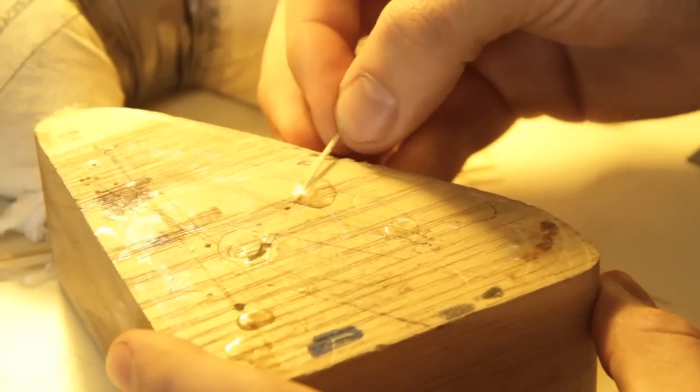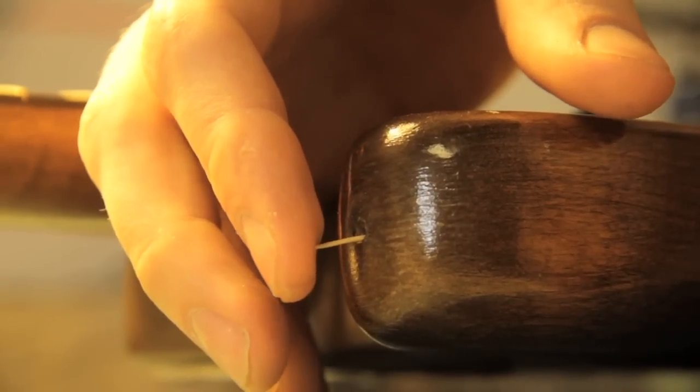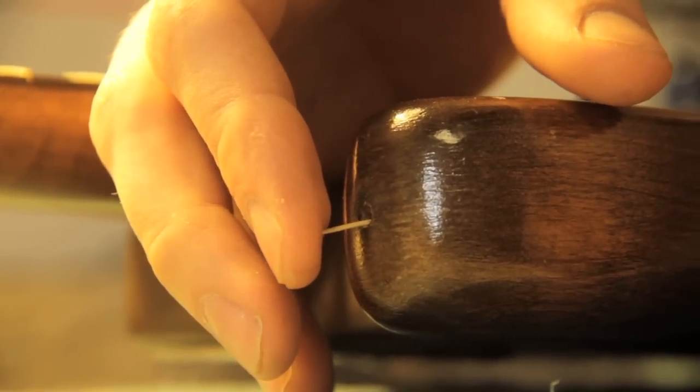Next, all we're going to do is roll your toothpick around in the super glue. Stick it in there and hold it in place for about 30 seconds.